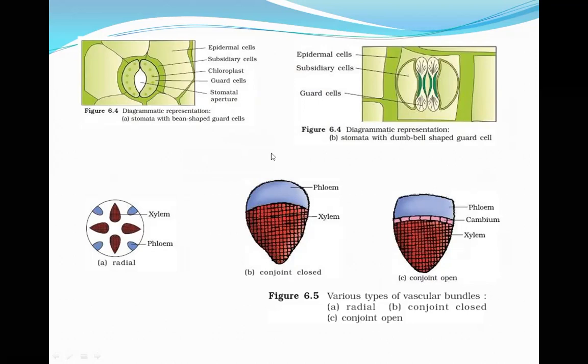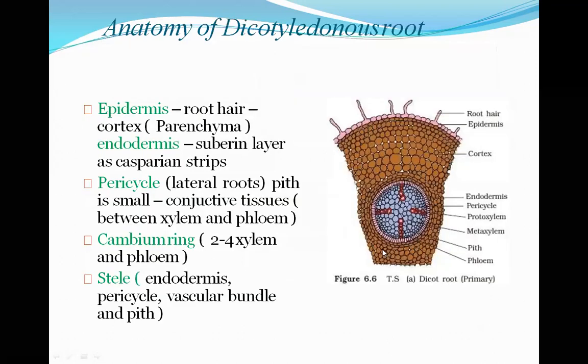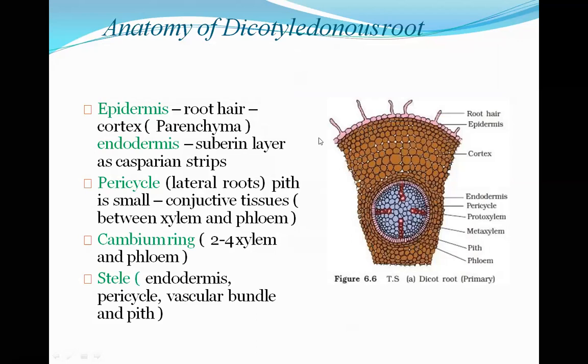This covers all three types of tissue systems: the epidermal tissue system, ground tissue system, and vascular tissue system. In the next class we will see the anatomy of dicotyledonous and monocotyledonous roots. I hope you are clear with today's lecture. Thank you.